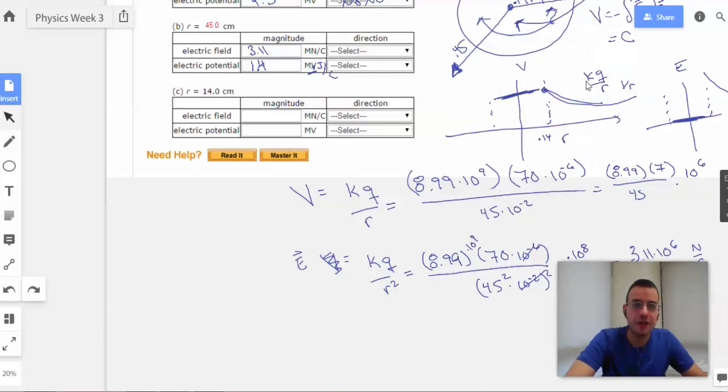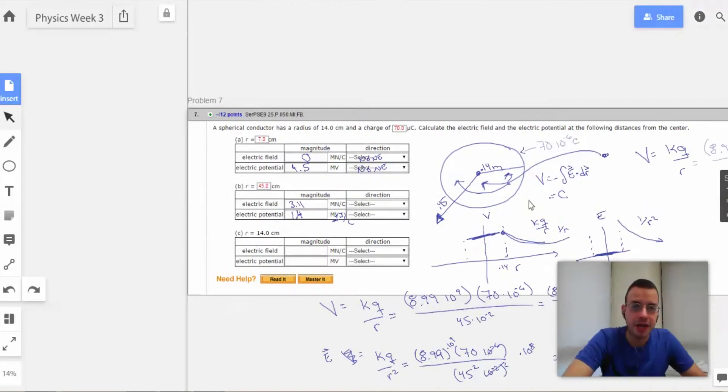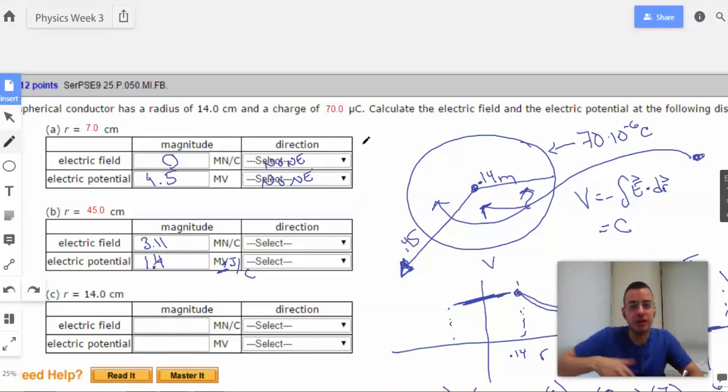And then direction. So for the direction, I know what we're looking at is positive. So the electric field is going to be from the center, radially outward.